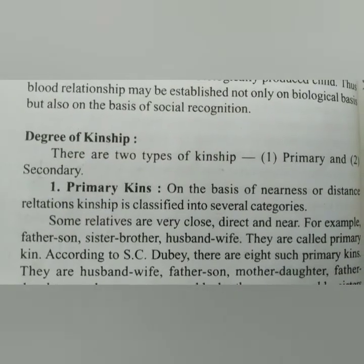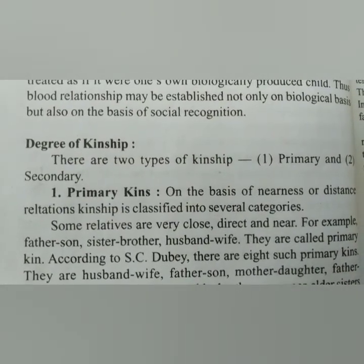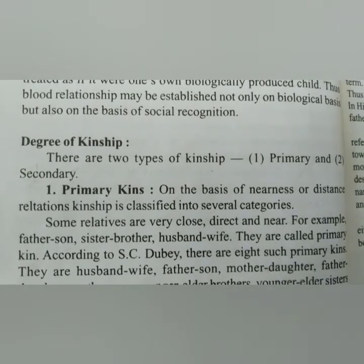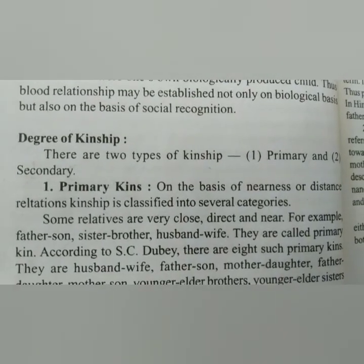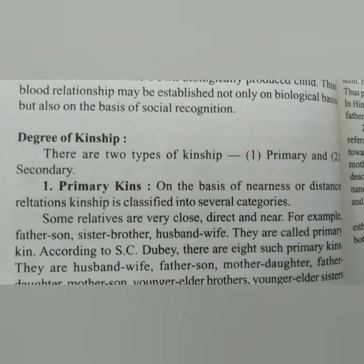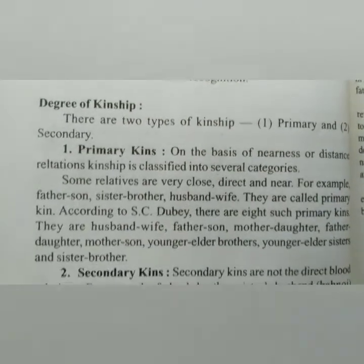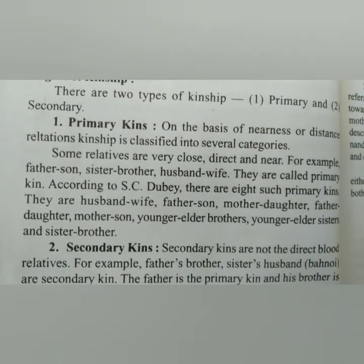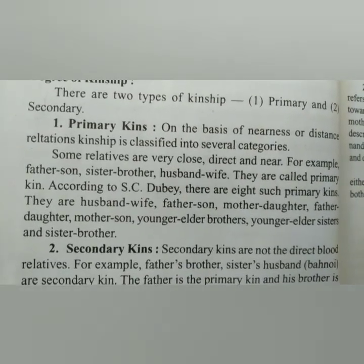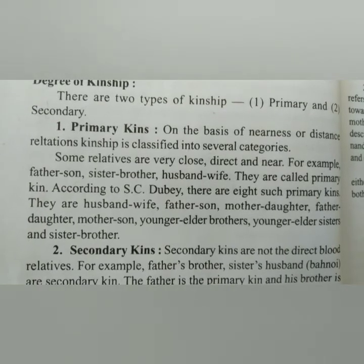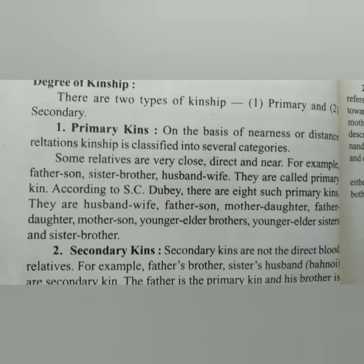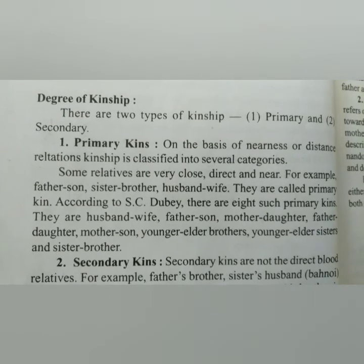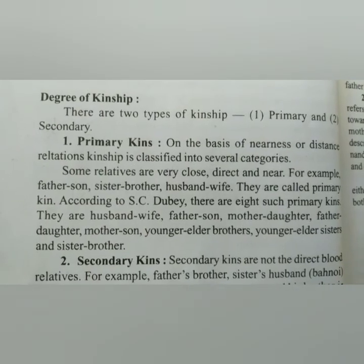The next point is degree of kinship. There are two types of degree of kinship: the first one is primary kins, and the other one is secondary kins. In the next class we will discuss these two types of degree of kinship system. Thank you.